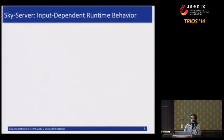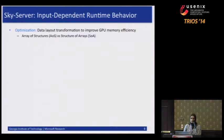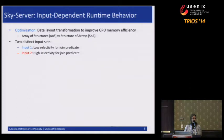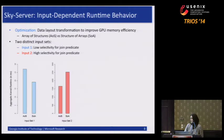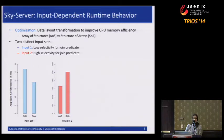Let's look at the behavior for these two different kinds of inputs with the data layout transformation. We perform the array-of-structures to structure-of-arrays transformation on two distinct inputs: Input 1 has low selectivity for the join predicate and Input 2 has high selectivity. What we see, presenting aggregate kernel runtime where lower is better, is that for Input 1 the optimization was helpful, but for Input 2 it actually degraded performance.